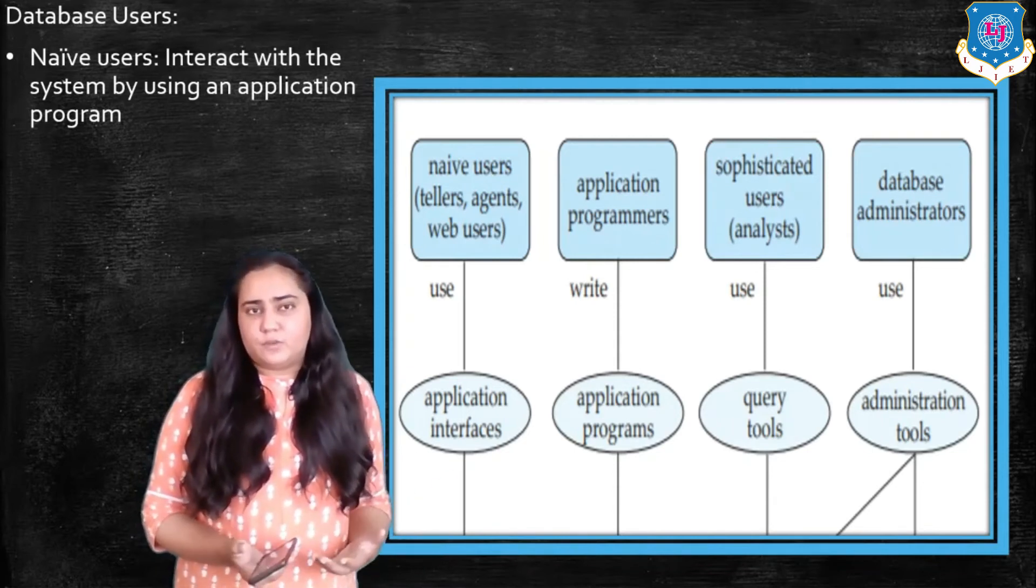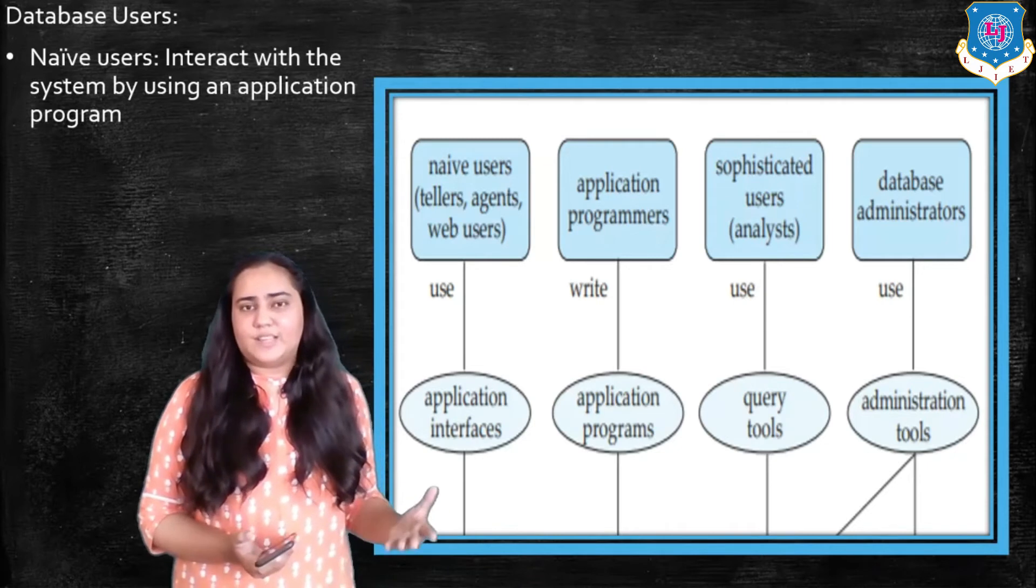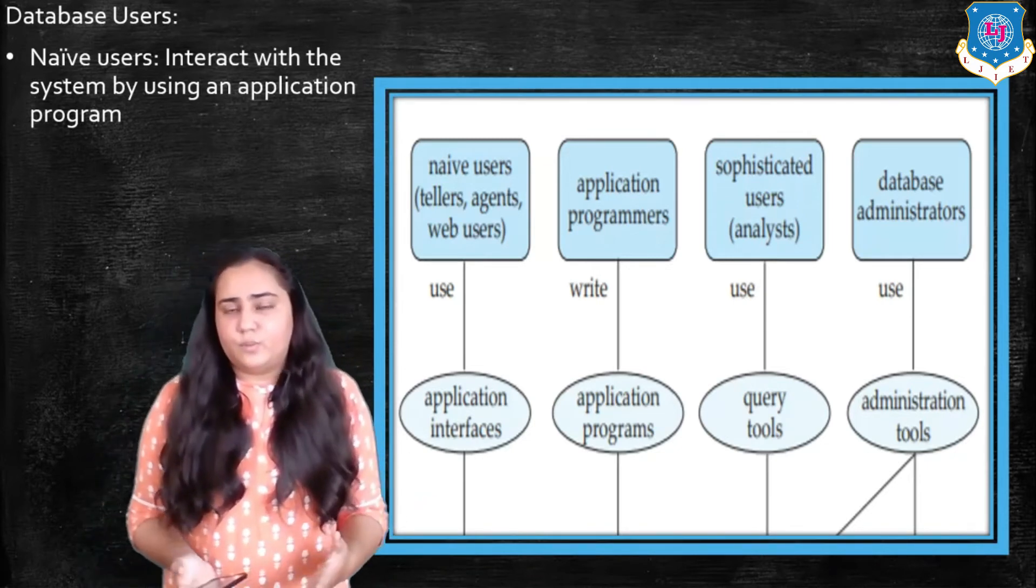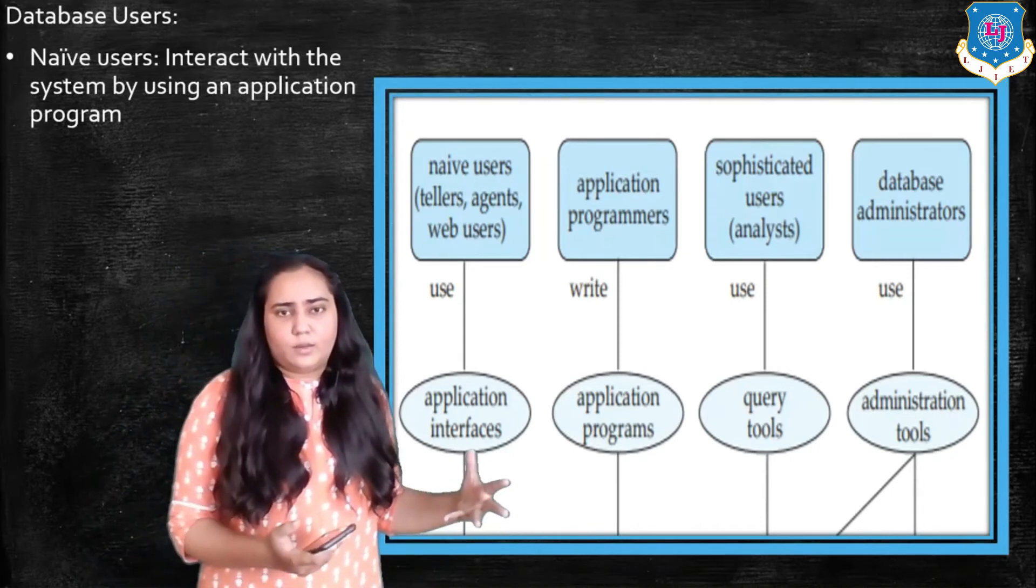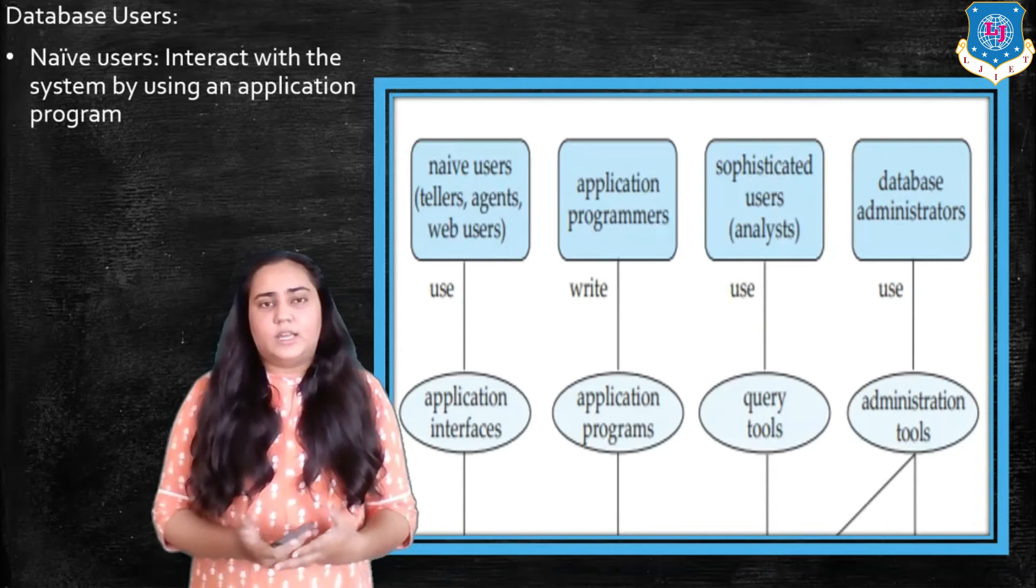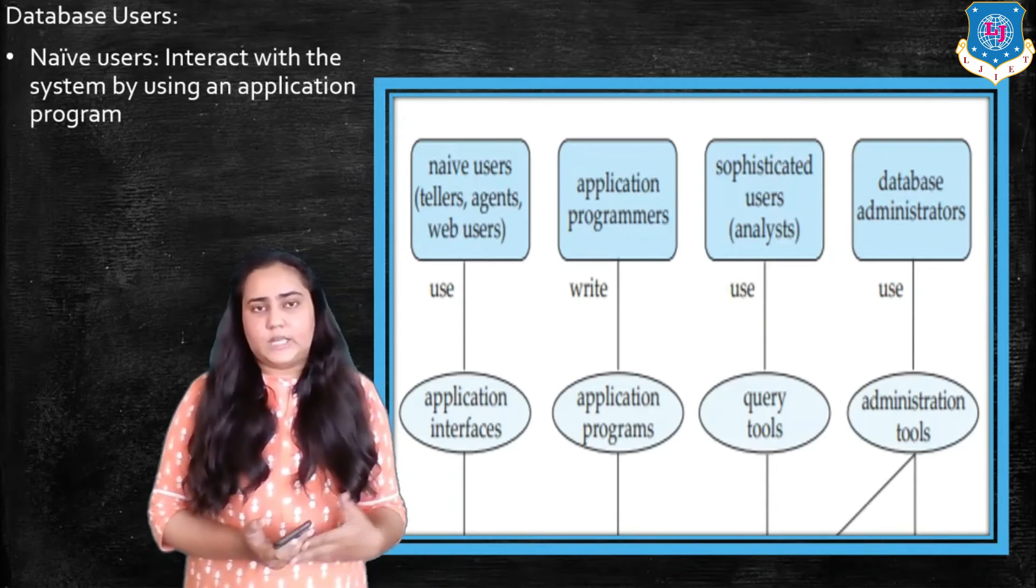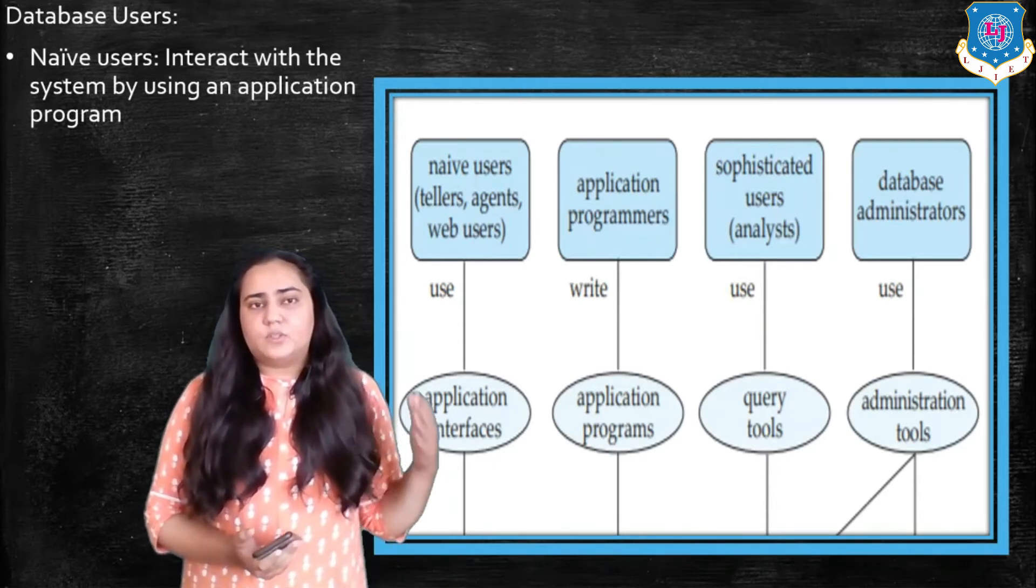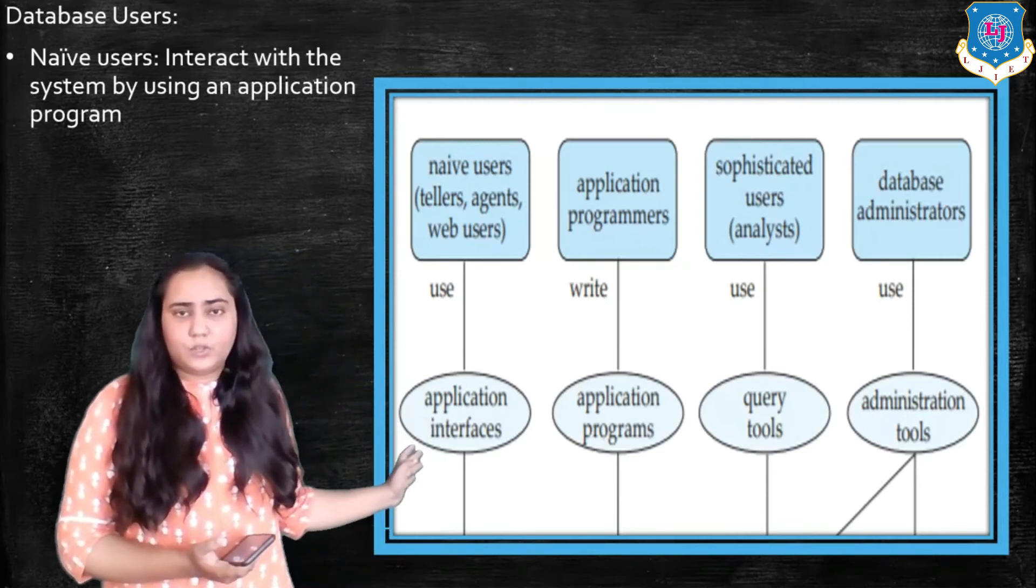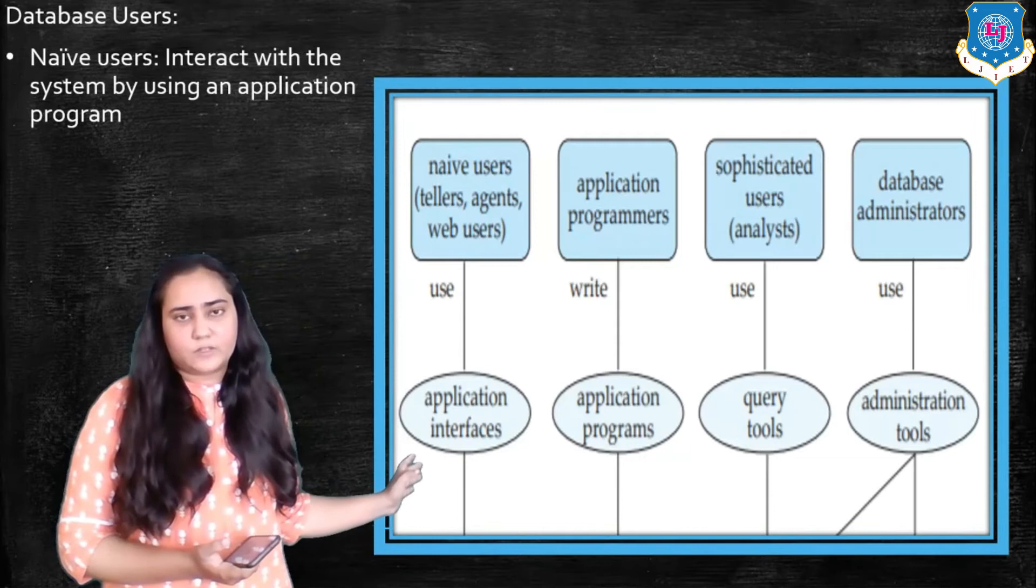Because we do not know how exactly the database is stored. We do not know how the person who's running the movie booking application is storing things in the database. So such users are called naive users and they use application interfaces.